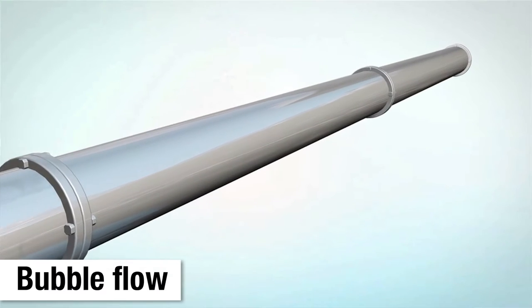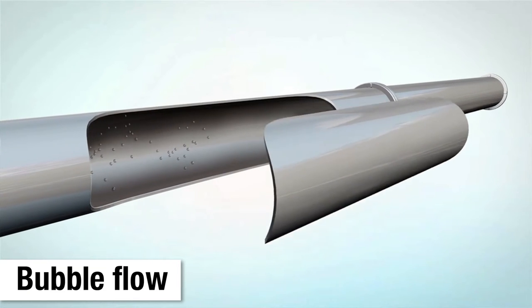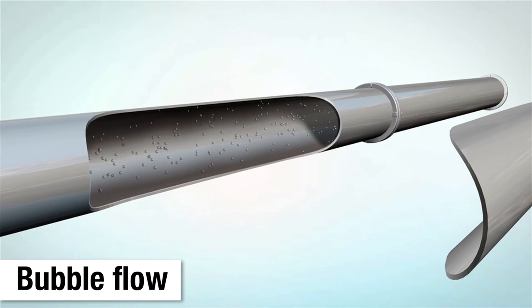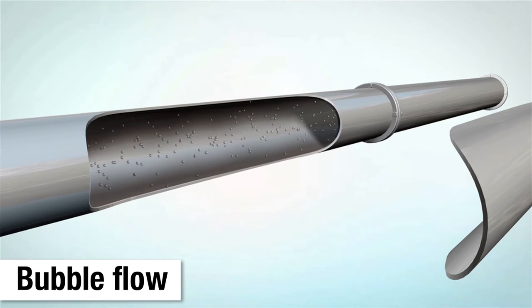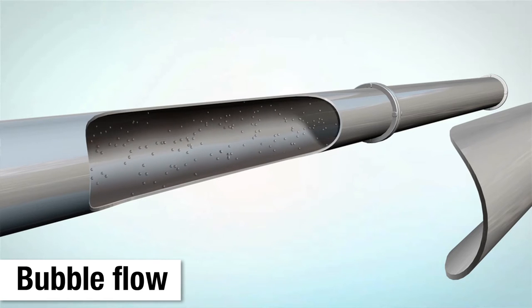Bubble flow is characterized by continuous, distributed bubbles that occur usually when air is added intentionally into a process — for example, in the manufacture of whipped cream or butter.